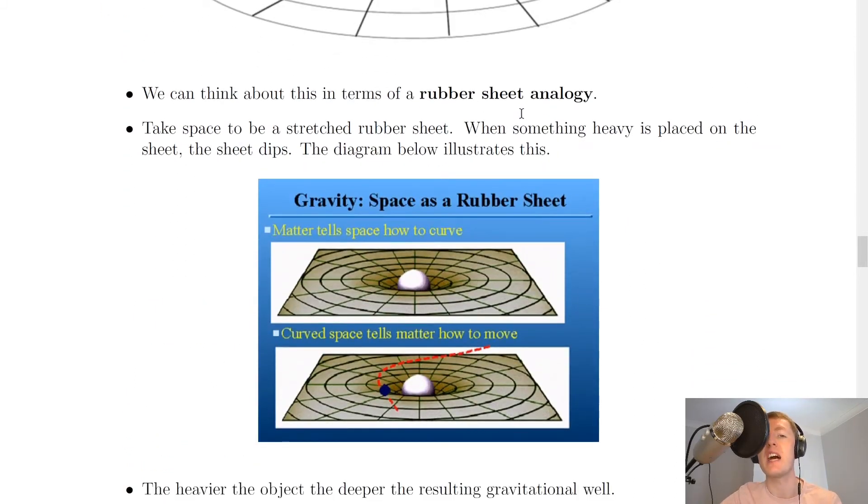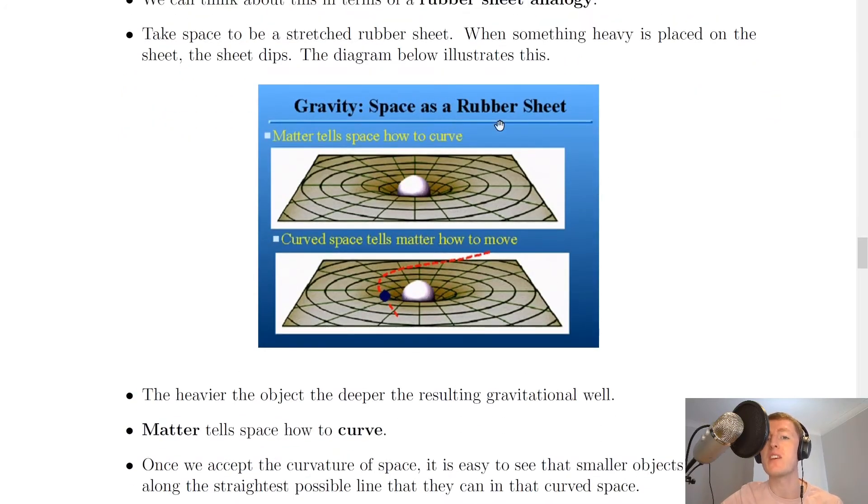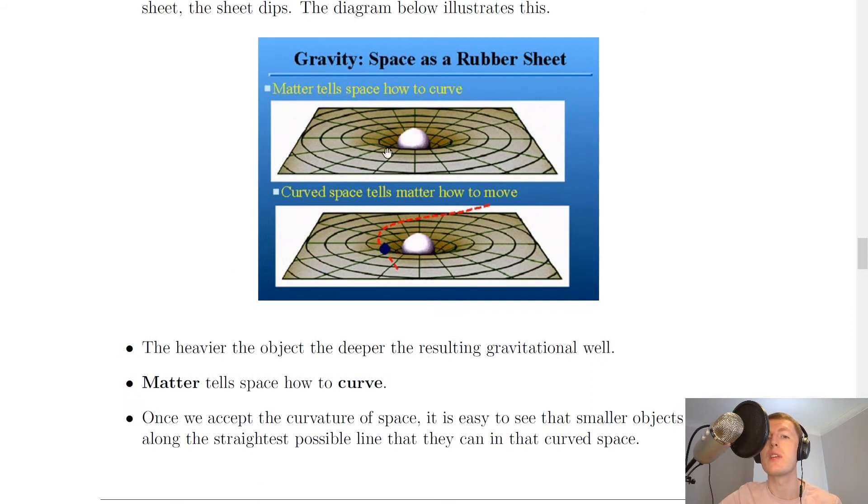And we can think about this in terms of a rubber sheet analogy. So take space to be a stretched rubber sheet. When something heavy is placed on the sheet, the sheet will dip. And the diagram below illustrates this. So here we've got space as a rubber sheet, so this analogy. So here we've got a massive object causing the warping of space-time.